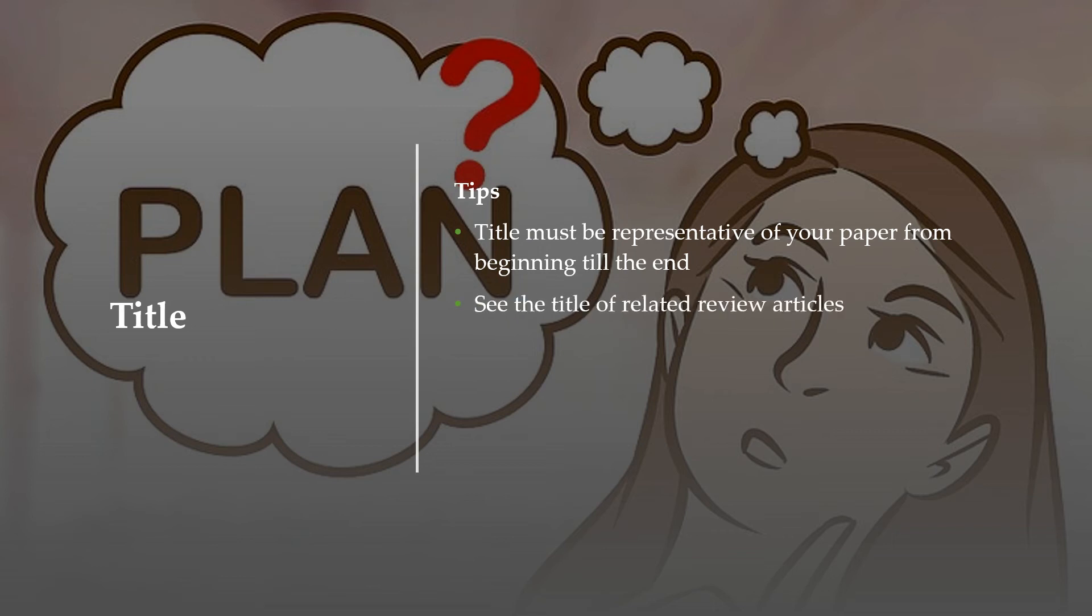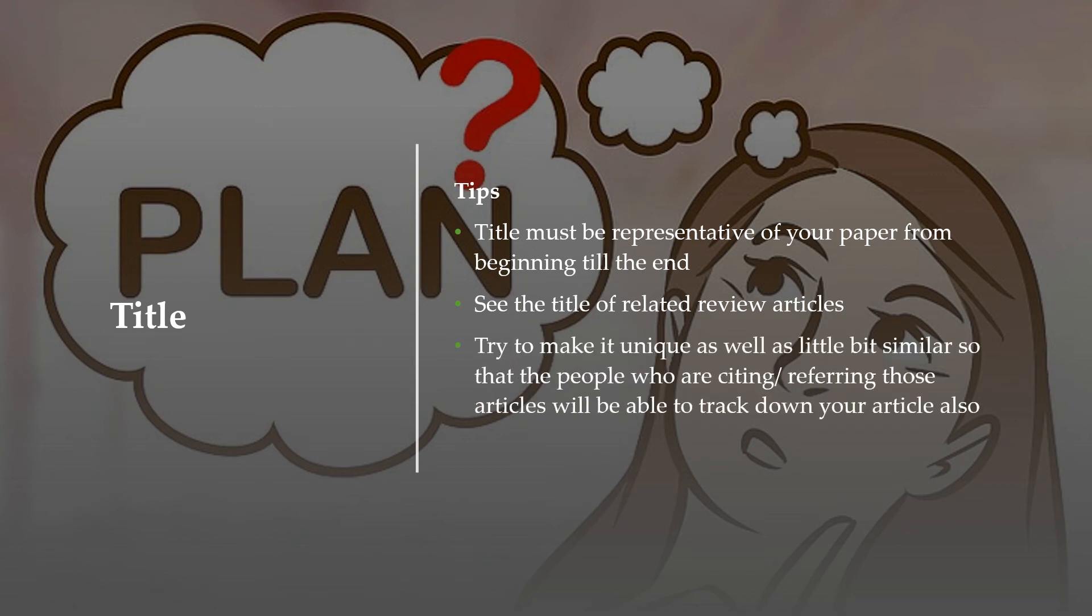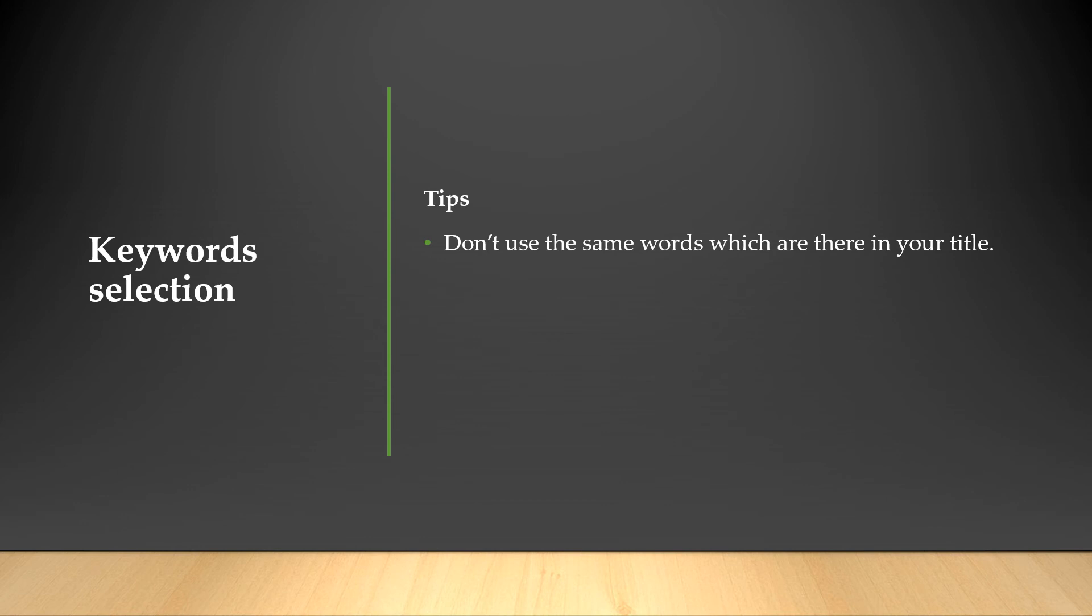See the title of related articles, related review articles, and try to make it unique as well as have a little bit of similarity so that the people who are citing or referring those articles will be able to track down your articles also. This holds true for selection of keywords. The key for keywords is: don't use the same words which are in your title because they are already there. You must give keywords which are not in your title and which are very important and your article is liable to be searched on the basis of those words. Those keywords should be selected only.